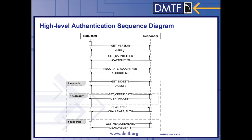Once the requester decides which version to use, it sends a get capabilities command and the responder responds with capabilities. This part of the flow discovers the capabilities of both SPDM endpoints. If the correct capability bits are set, the requester proceeds with negotiate algorithms and expects an algorithms response. This request and response pair negotiates the various algorithms to be used in future communication. The responder selects the algorithm in this flow.